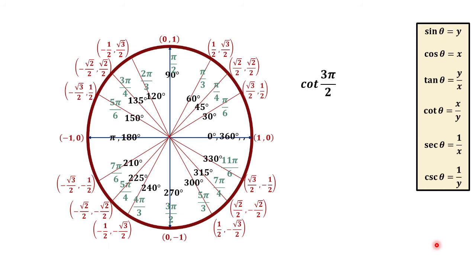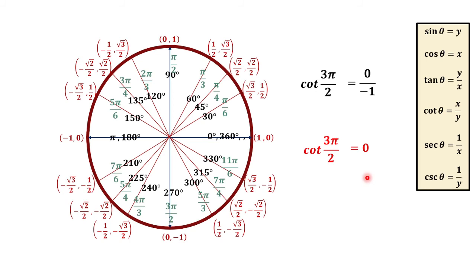For cotangent of 3 pi over 2, that is the same as 270 degrees. Cotangent is x over y. x is 0 and y is negative 1, so 0 over negative 1 is equal to 0. That is cotangent 3 pi over 2.